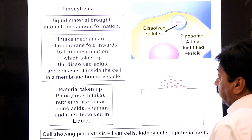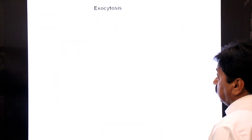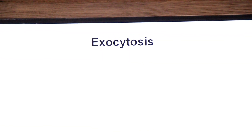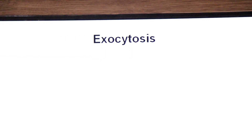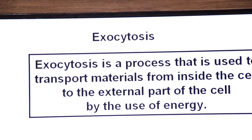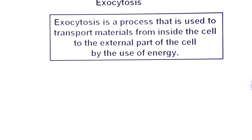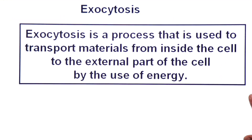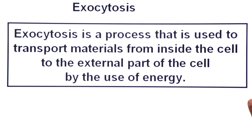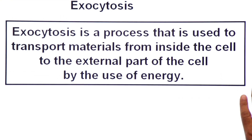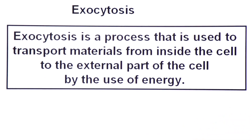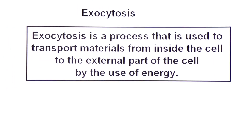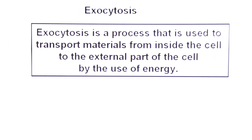The third active transport process is exocytosis. Exocytosis is the process used to transport material from inside the cell to the external part of the cell by use of energy. In the animation, a vesicle fuses with the plasma membrane and discharges material outside the cell.